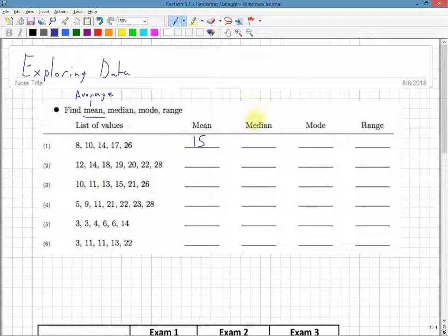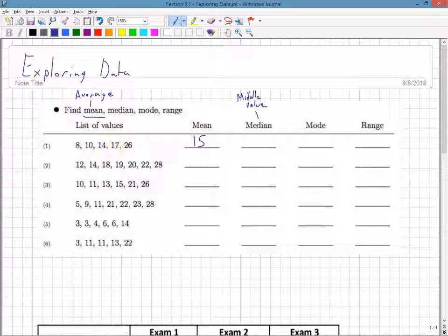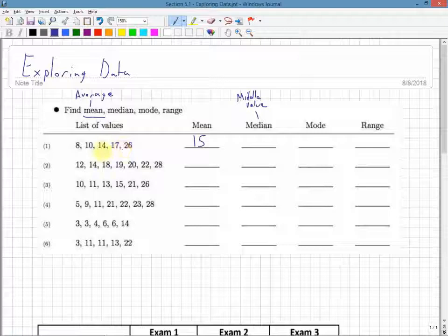The median is also known as the middle value. This only works if the data is organized from least to greatest. Looking at this data set - 8, 10, 14 - it's organized properly. I look at the middle value: 1, 2, 3, 4, 5 values. I can take the middle value, which is the third one, meaning there's two before and two after.